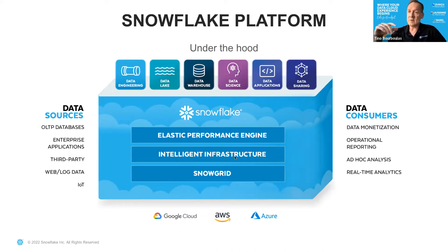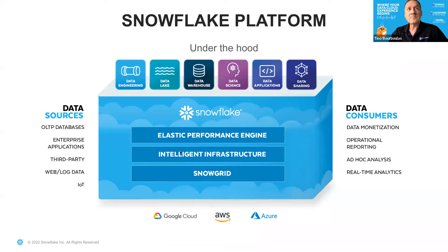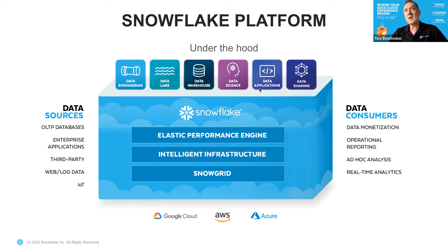The Snow Grid is this global network across cloud vendors. We have an intelligent infrastructure — near-zero maintenance. On top of it we have the elastic performance engine. The use cases we cover: data warehouse, data engineering, data lake, data science, data applications, and data sharing. Importantly, these are not separate modules you have to buy — this is simply how Snowflake is used by our customers.